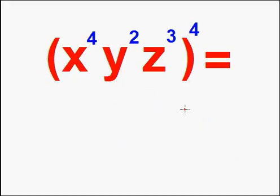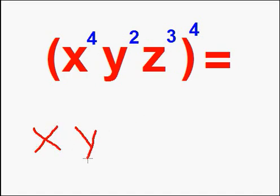The same rules apply to variables. We're going to keep the same base and the exponent will change. Here's an example of more than one element inside the parenthesis: x to the 4th, y to the 2nd, z to the 3rd, all of it raised to the 4th power. We're going to multiply each exponent by the outside exponent, keeping the same bases — x, y, and z.